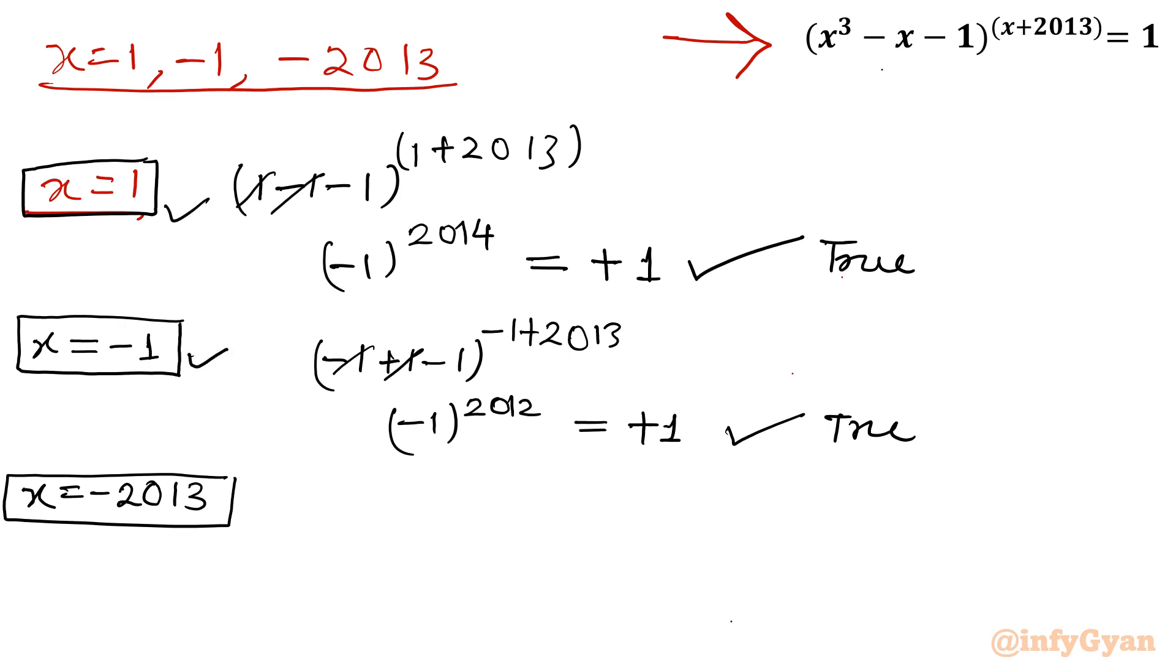Third one, minus 2013. I am going to put minus 2013 whole cube, minus minus 2013, minus 1, and power is 0. It should not be 0. We have already checked. So anything which is having power 0, base is non-zero, I will write 1. So this is also true. Fourth value 1.521 you can check by putting number.